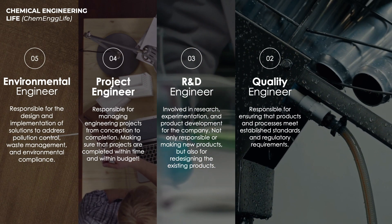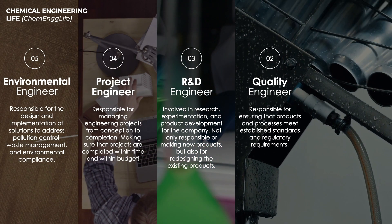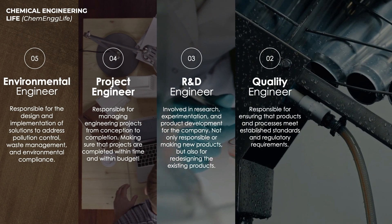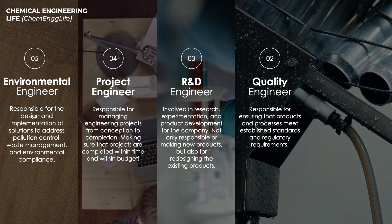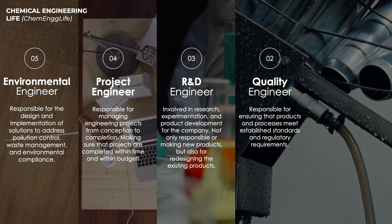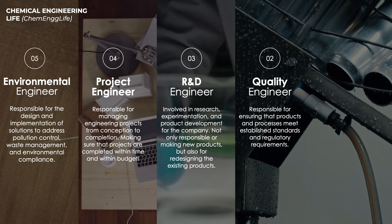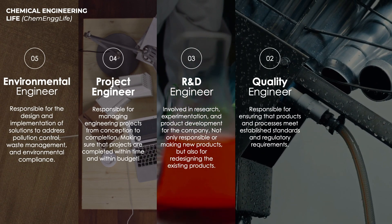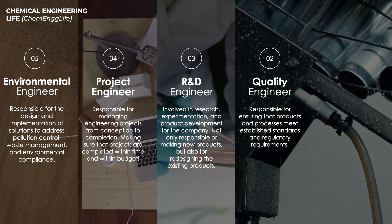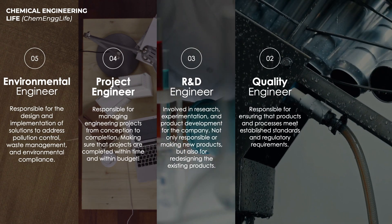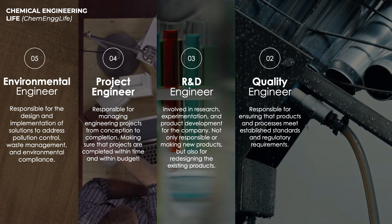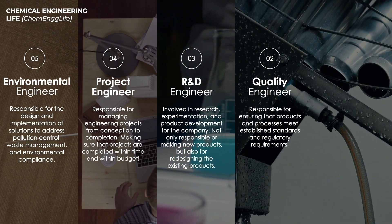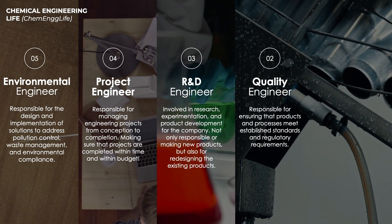The job role at number 2 is Quality Engineer. One thing that we all can agree on is that regardless of what industry you are working in, the quality of your products has to be of the utmost importance. Quality engineers are the professionals that make sure that it is. They are responsible for making sure that the products and processes meet the established standards and the regulatory requirements. Chemical engineers working in quality engineering roles make sure that all the products being shipped out meet the necessary requirements.